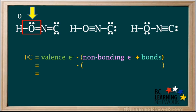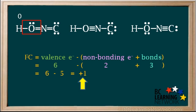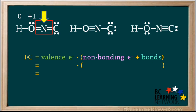Now we'll calculate the formal charge on the oxygen atom. Oxygen has six valence electrons. Here, the oxygen has two non-bonding electrons and a total of three bonds. So the formal charge is six minus five, which equals positive one, which we'll write above the O atom here.